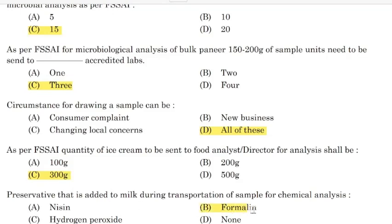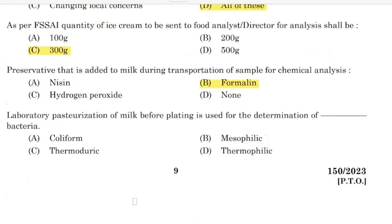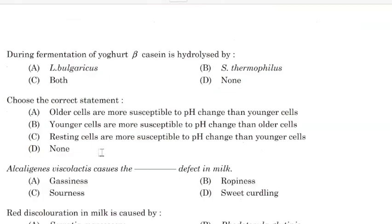Preservative that is added to milk during transportation of sample for chemical analysis — Correct answer: Option B — Formalin. For laboratory pasteurization of milk before plating, it is used for the determination of blank bacteria — Correct answer: Option C — Thermoduric.